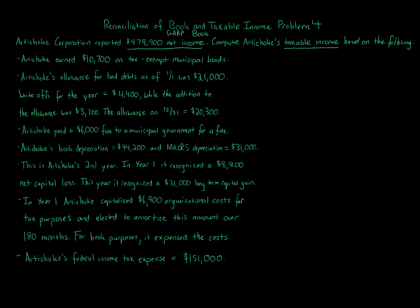We just have to figure out taxable income — that's the end number we're looking for. The best way to do this is to go through each item listed. You always start with the given net income, which is $479,900. That's always going to be our starting point, and then we increase and decrease for certain adjustments based on what the rules are.